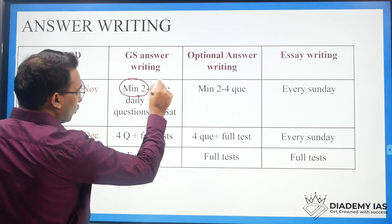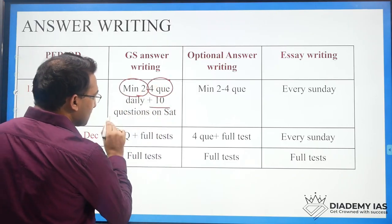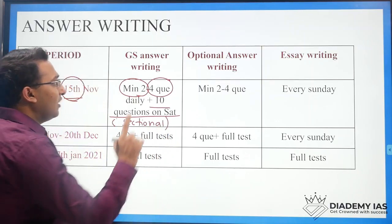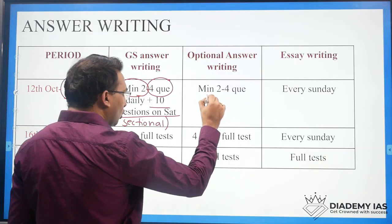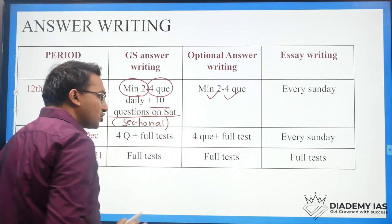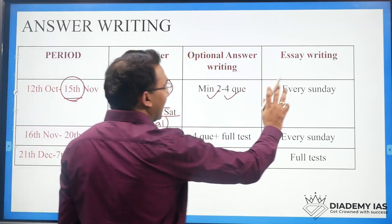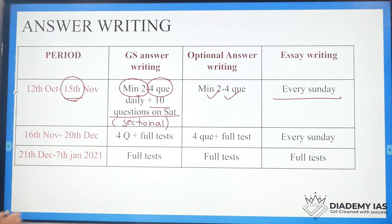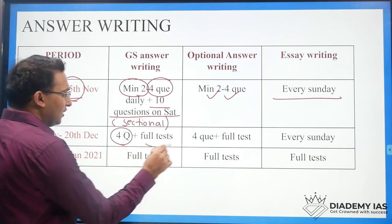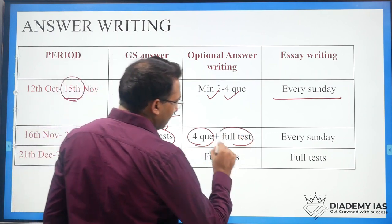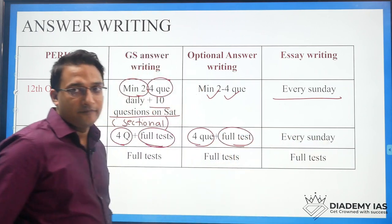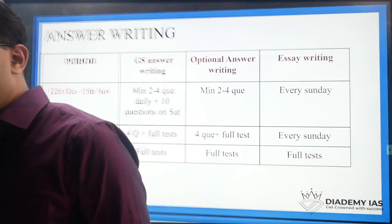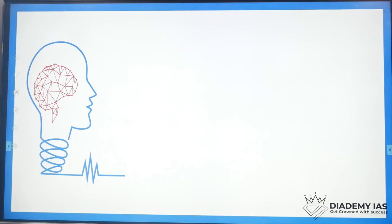From 12th October to 15th November, write a minimum of two questions and up to four questions on a daily basis, plus ten questions in a sectional test on the weekend. Follow the same mechanism for the optional. For essay writing, write one essay and make the structure of one essay every Sunday. From 16th November to 20th December, write four questions daily with a full test on the weekend.